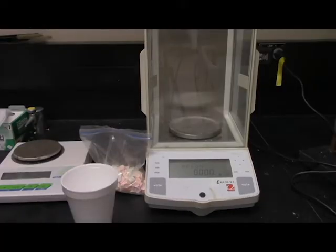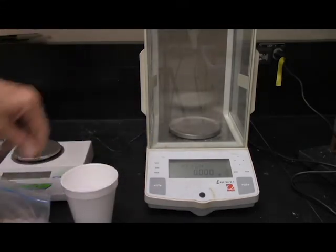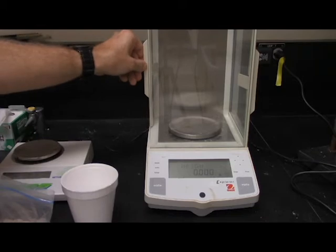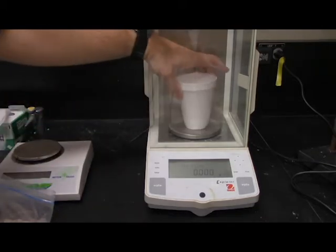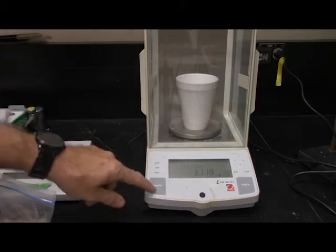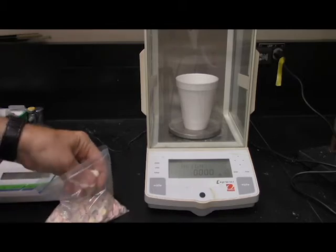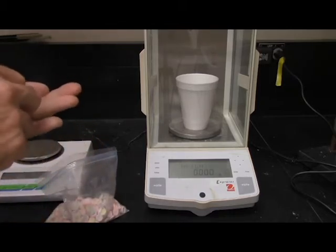So what you do is you take some of your Smarties and some sort of container, I like this Styrofoam cup, put it in there, and of course we're going to zero out the weight of the Styrofoam cup. And I'm going to grab just 12 Smarties. We're going to weigh a dozen of them.